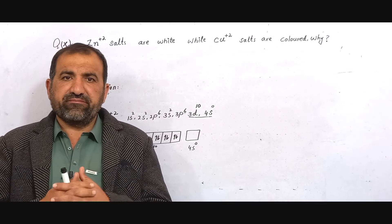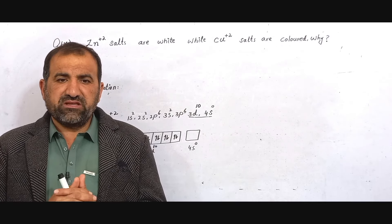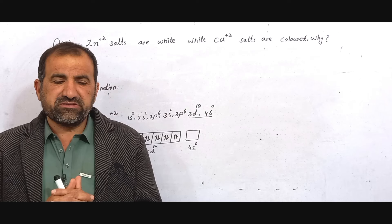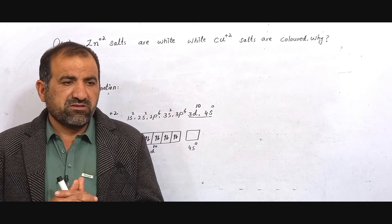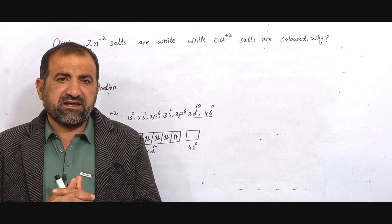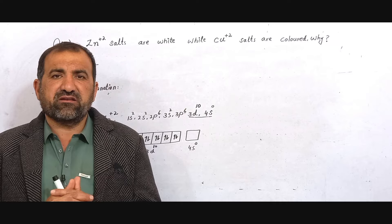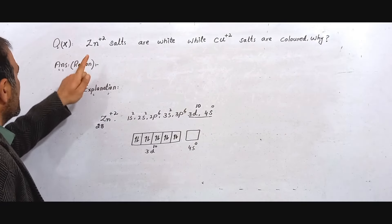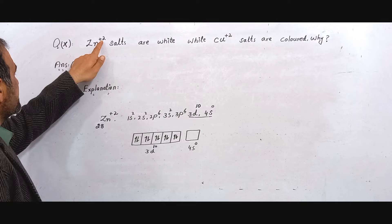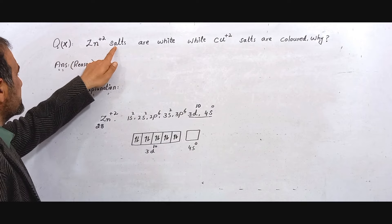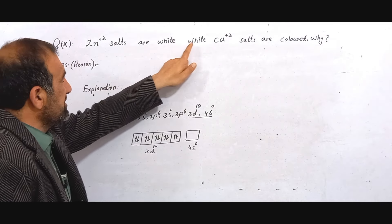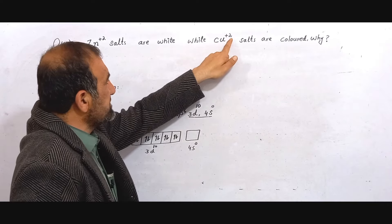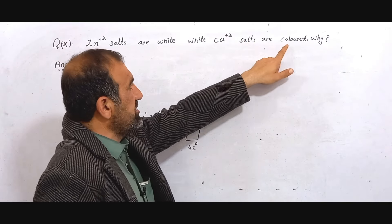Bismillah ar-Rahman ar-Rahim. In the second year chemistry exercise, the second chapter, short question number 10: Zn²⁺ salts compounds are white colorless while Cu²⁺ salts compounds are colored. The question is why?